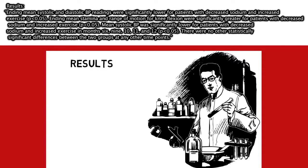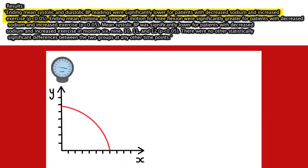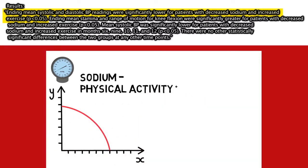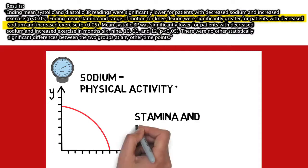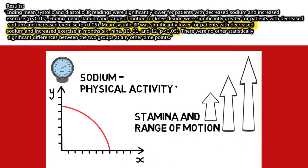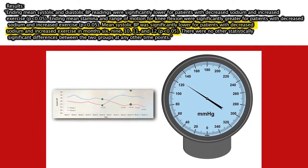In the results section we report our major findings, and as is customary in quantitative research, we save interpretation of findings for the conclusion of the abstract. Here we note that there was a statistically significant decrease in blood pressure for patients that lowered their sodium intake and increased their physical activity. In addition, there were increases in stamina and range of motion for these patients. We also mentioned that average systolic blood pressure was lower for these patients at several time points.